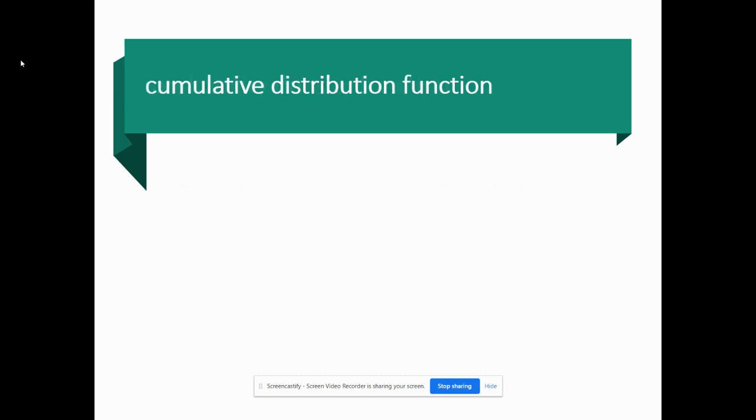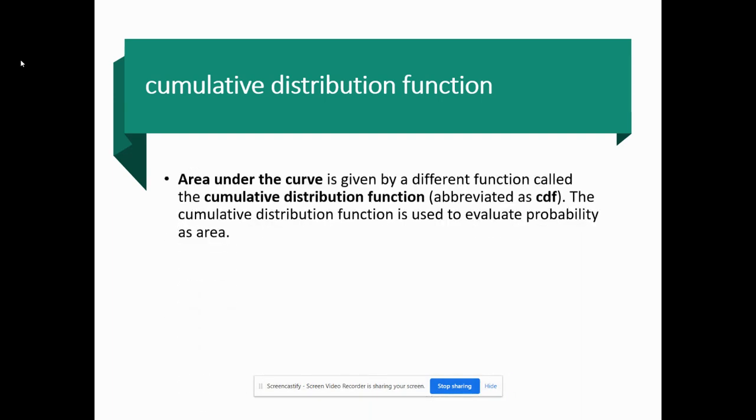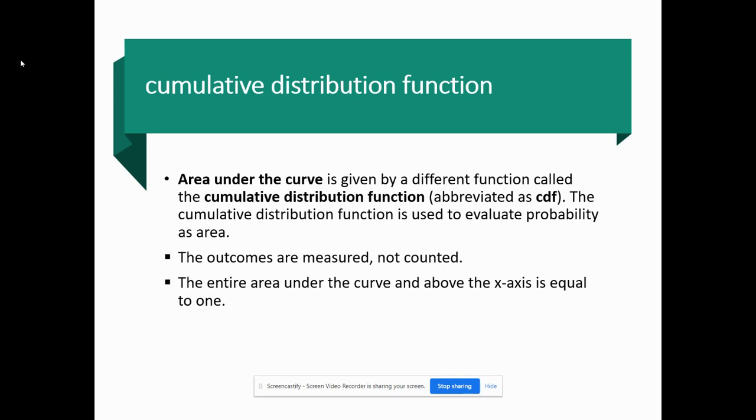Cumulative distribution function - if you go back and think about what we did in binomial, if I use the binomial PDF that was the exact value. If I use the CDF, it was everything and below. The area under the curve is given by a different function called the cumulative distribution function or CDF. The cumulative distribution function is used to evaluate probabilities as an area. The outcomes are measured and not counted like what we did before, and the entire area under the curve and above the x-axis is equal to 1.